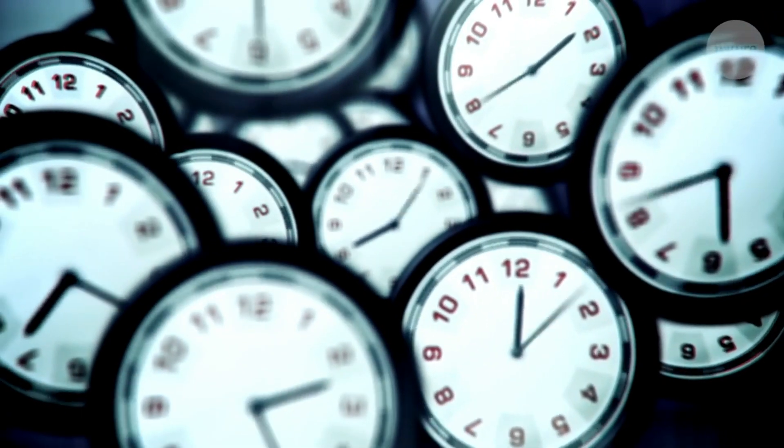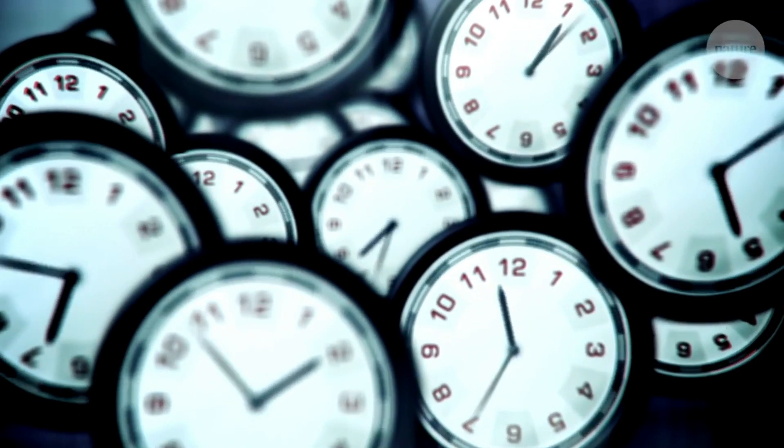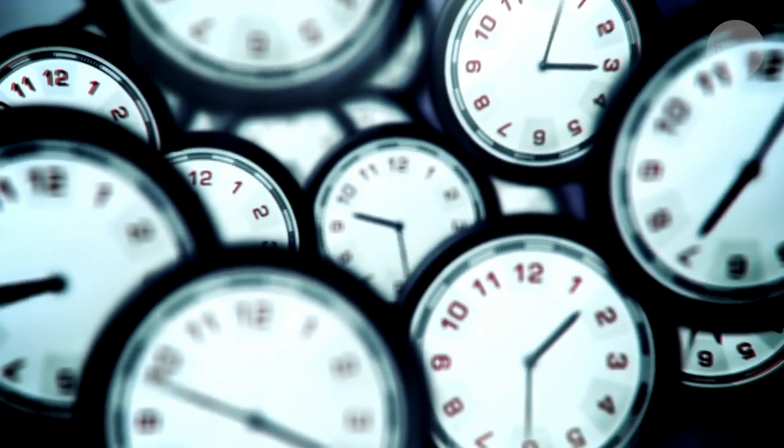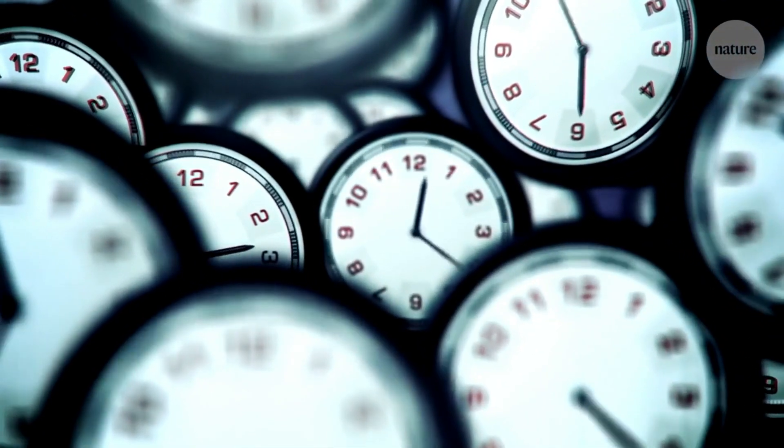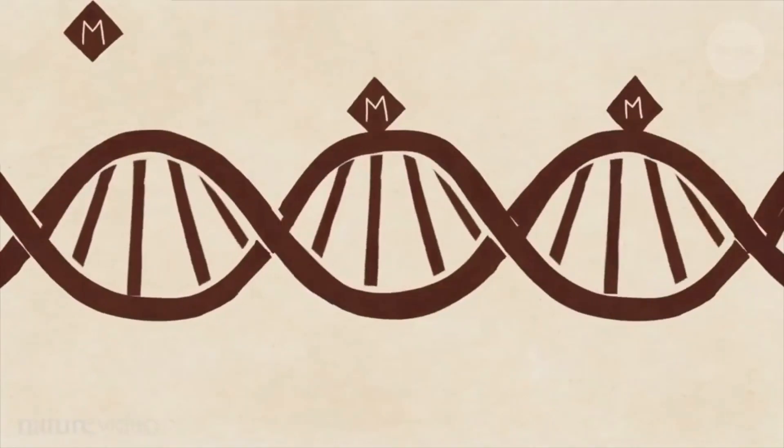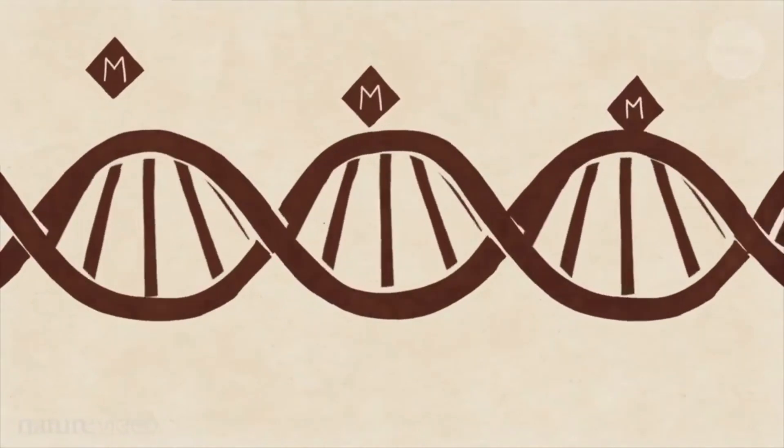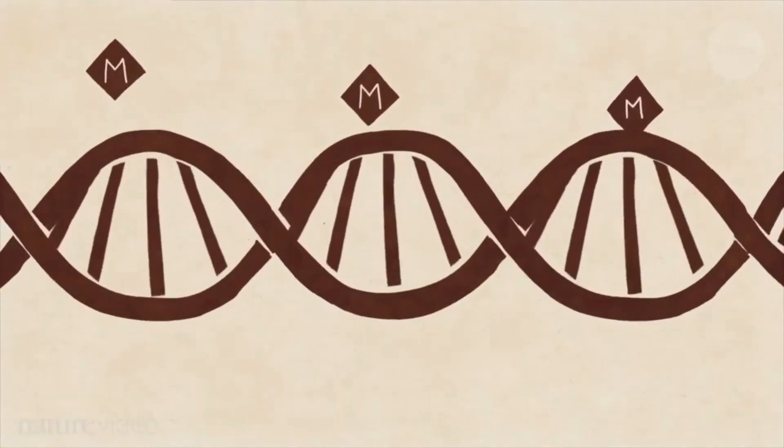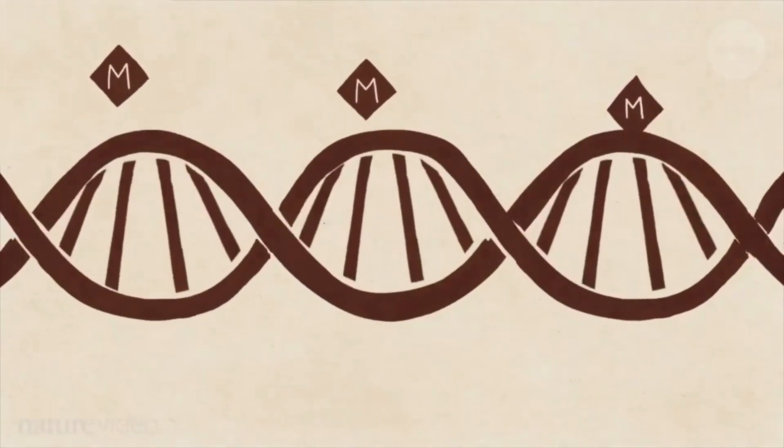Researchers believe that there is actually a DNA clock that tells our body how old we are. As the clock dictates the time, the body acts accordingly. This is done by the process called methylation of the DNA. As we grow older, more methylation happens to the DNA and we don't yet know why this happens.